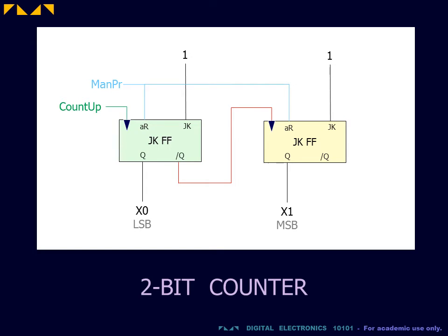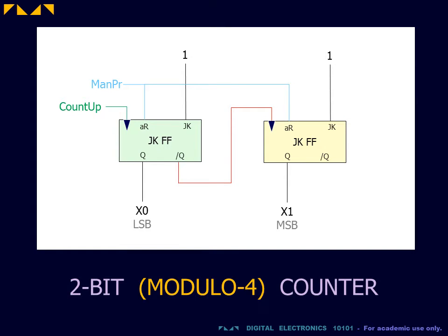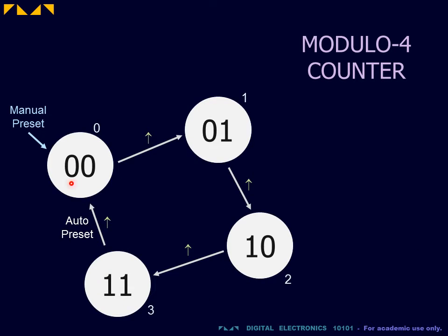In previous videos, we designed a 2-bit up counter. The 2-bit counter is a modulo 4 counter. A modulo 4 counter has four distinct counts. As unsigned integers, these are interpreted as numbers from 0 to 3.